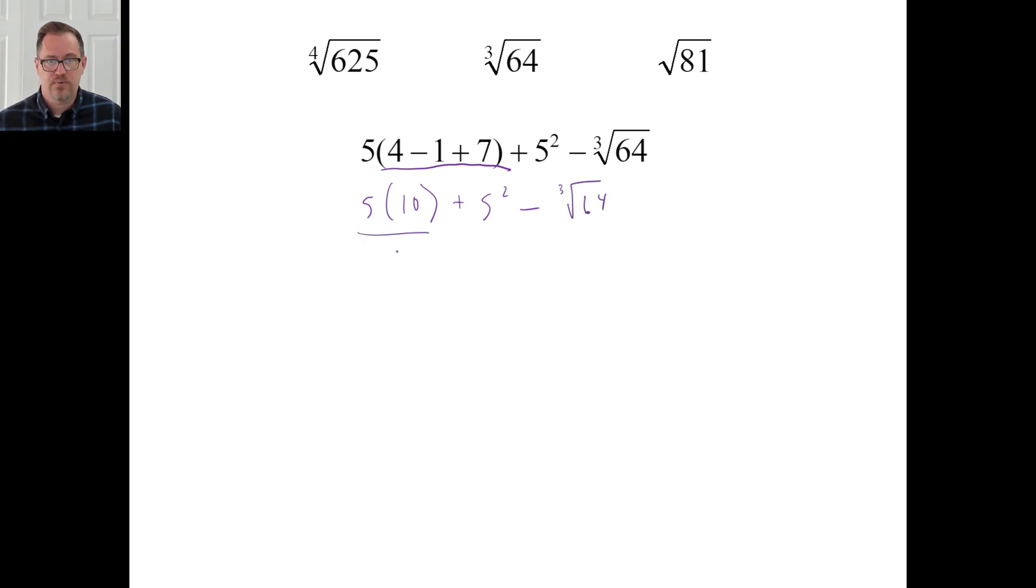Let's go ahead and do that part first. So that's 50. And then we can go ahead and just take care of the exponents there. Five squared is five times five. The cube root of 64, four. And 75 minus four is 71. There you go. And that's exponents and roots.